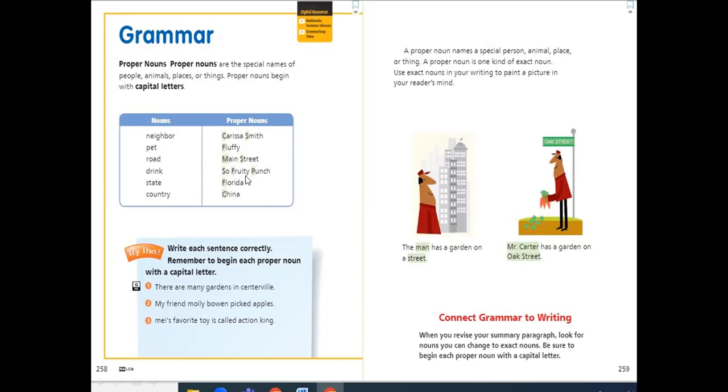And here, drink. So Fruity Punch. Drink here can be any drink. State, like Florida. Florida State in the United States. This is a name of a state. But if I said state only, this is a common noun.